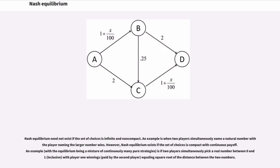Nash equilibrium need not exist if the set of choices is infinite and non-compact. An example is when two players simultaneously name a natural number with the player naming the larger number winning. However, Nash equilibrium exists if the set of choices is compact with continuous payoff. An example is if two players simultaneously pick a real number between 0 and 1 with player 1's winnings equaling the square root of the distance between the two numbers.